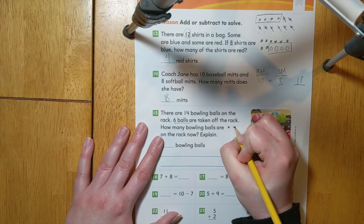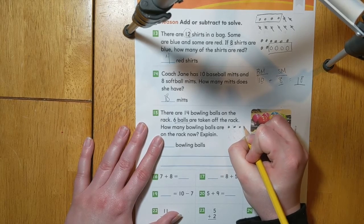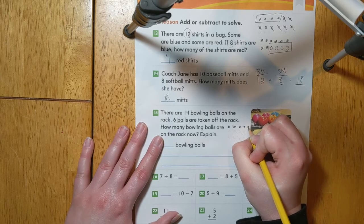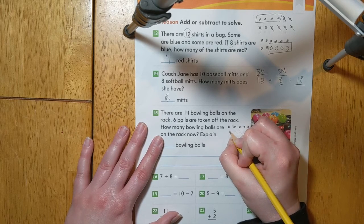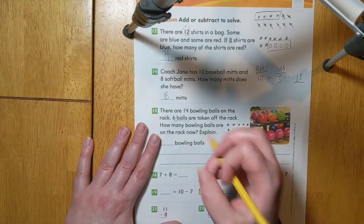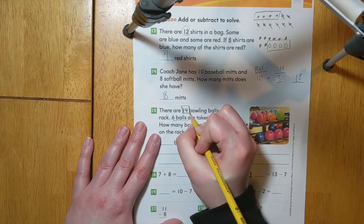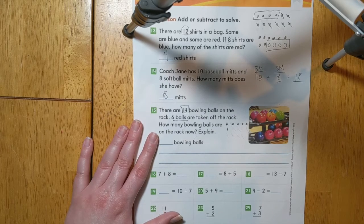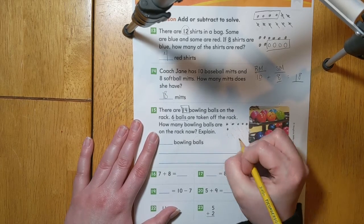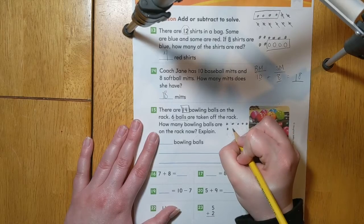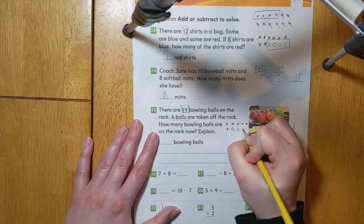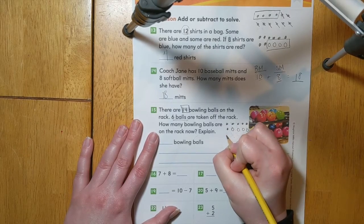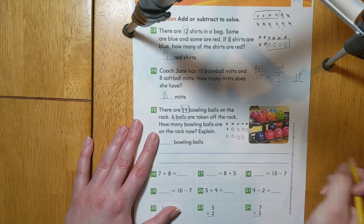One, two, three, four, five, six. We know that there are 14 all together. So let's count on until we get to the number 14. We have 6, 7, 8, 9, 10, 11, 12, 13, 14.